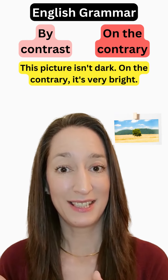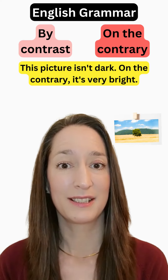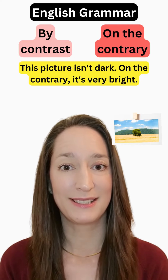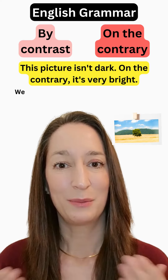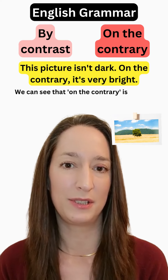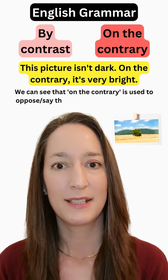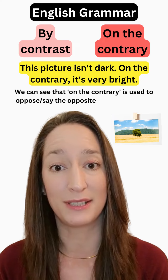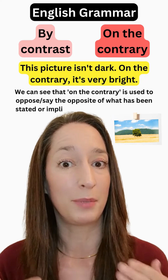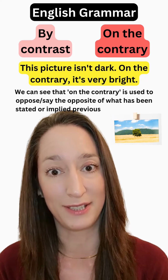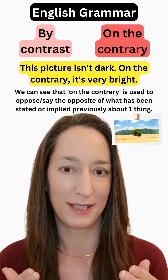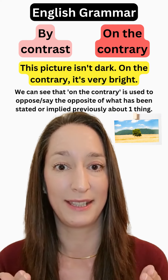This picture isn't dark. On the contrary, it's very bright. We can see that 'on the contrary' is used to oppose — to say the opposite of what has been stated or implied previously about the same subject, that is one thing: